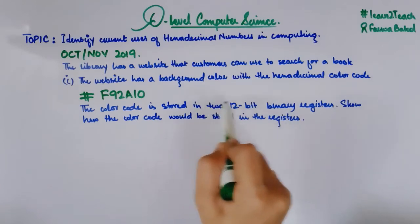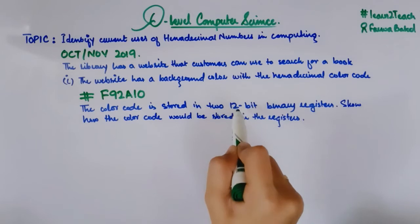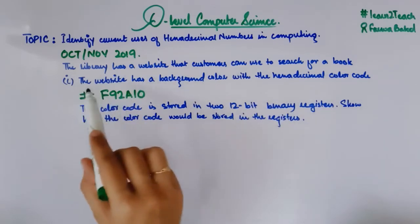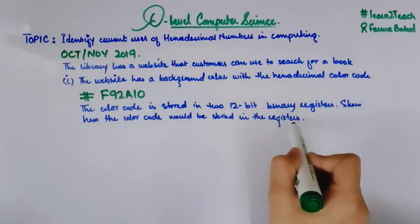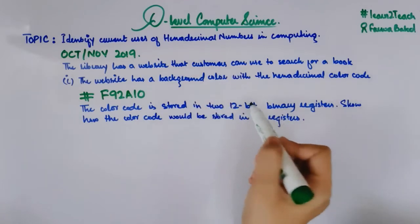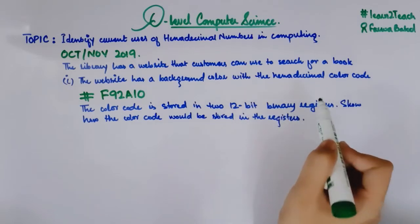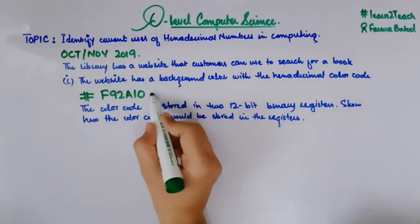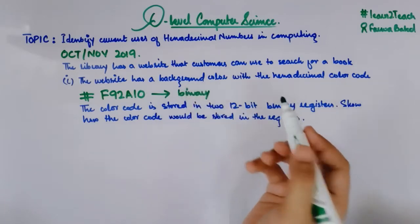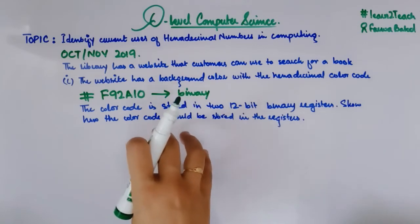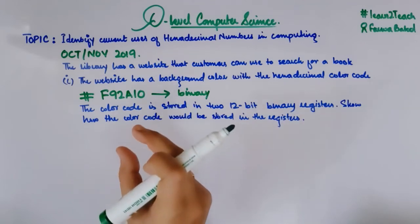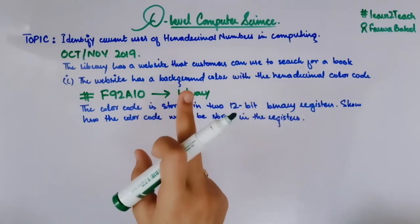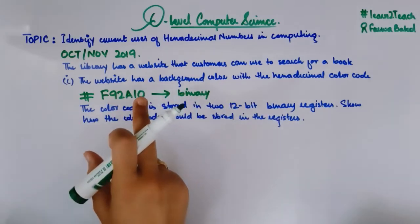We have two registers and each register carries 12 bits. We need to show how the color code would be stored in those registers. Since registers store data in binary, we need to convert this hexadecimal color code into binary. I'll use a hexadecimal-to-binary conversion table to solve this problem.